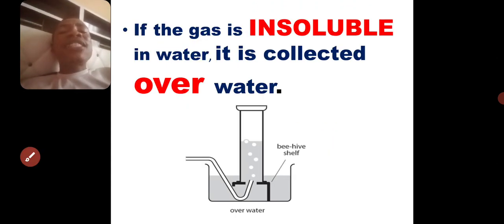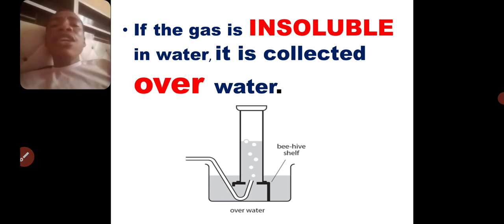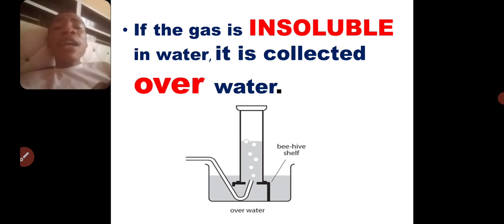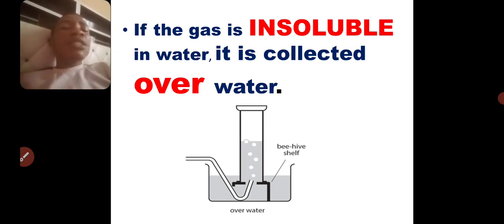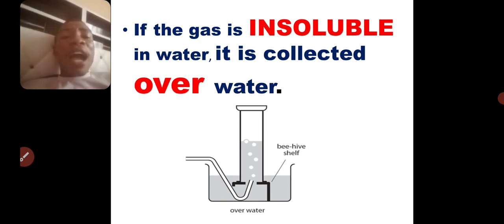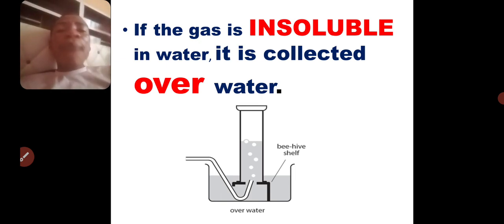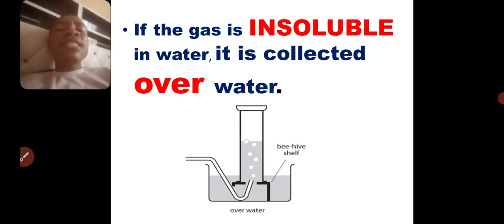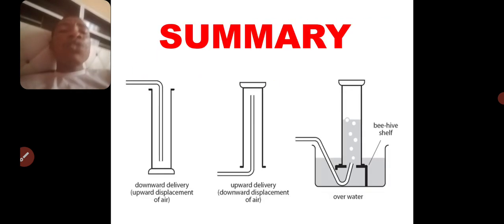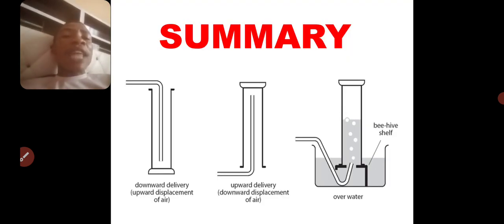But when the gas is soluble in water, you don't collect that kind of gas over water, because the gas will dissolve in the water and will not be able to displace it. An example is ammonia — ammonia and hydrogen chloride gas can never be collected over water because they are highly soluble in water.